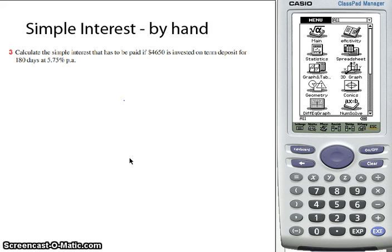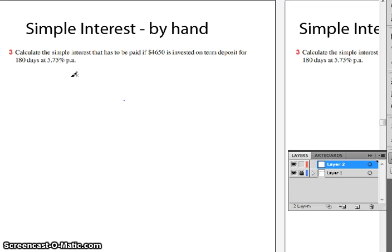So in this first example, we're going to look at how to calculate simple interest by hand using our simple rule. I've got an example question here. What we're going to do is just set out first the rule that you should be familiar with.